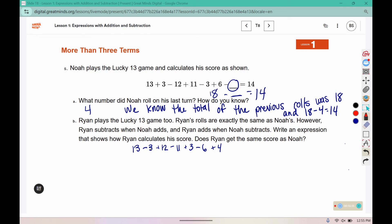If we subtract, 13 minus 3 is 10. 10 plus 12 is 22. 22 minus 11 is 11. 11 plus 3 is 14. 14 minus 6 is 8. And 8 plus 4 is 12. So does Ryan get the same score? Ryan does not get the same score as Noah.